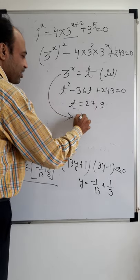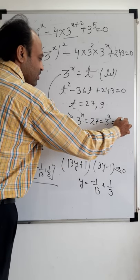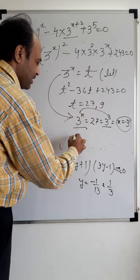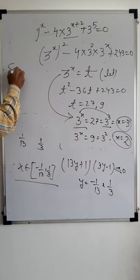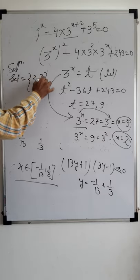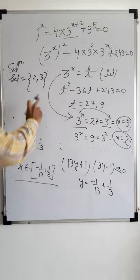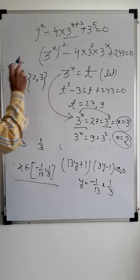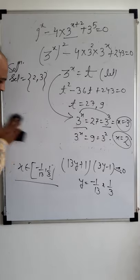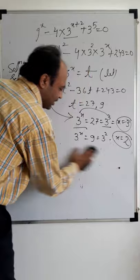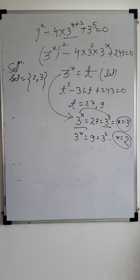Solving t² - 36t + 243 = 0, we get t = 27 and t = 9. So 3^x = 27 = 3³, giving x = 3; and 3^x = 9 = 3², giving x = 2. The solution set is {2, 3} — these are specific values, not an interval. Both satisfy the original equation. In such equations you substitute to reduce to a quadratic. This type has appeared in NDA exams, so you must know how to reduce such equations to quadratic form.